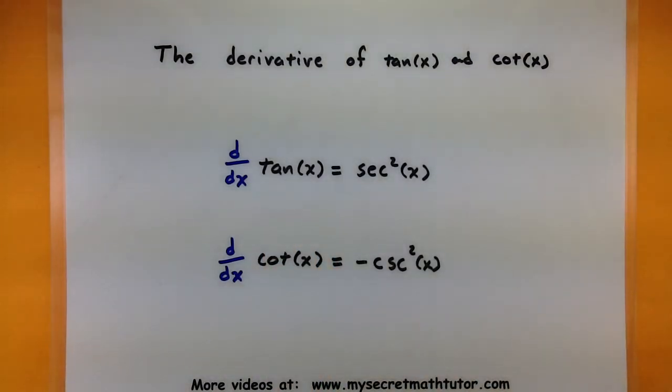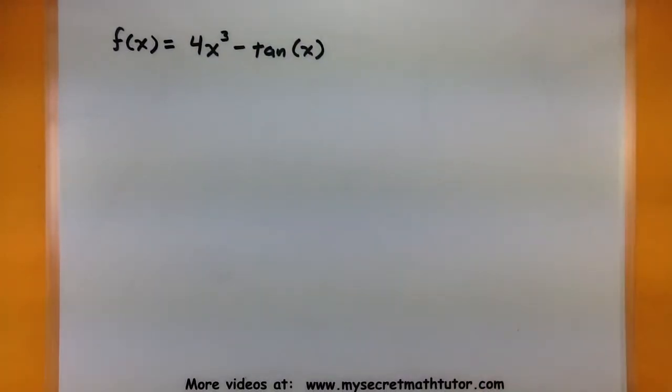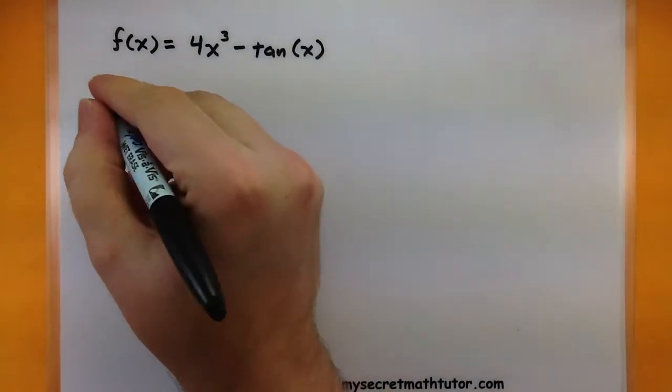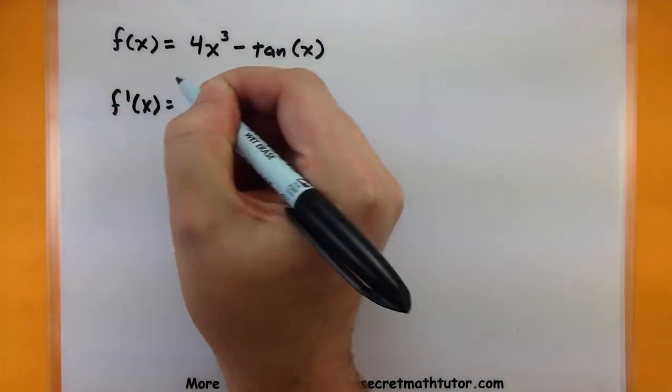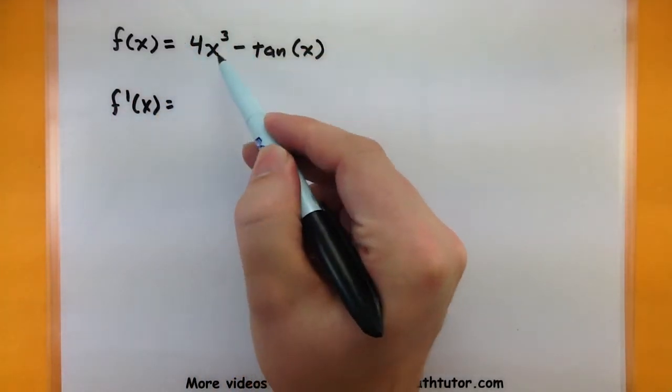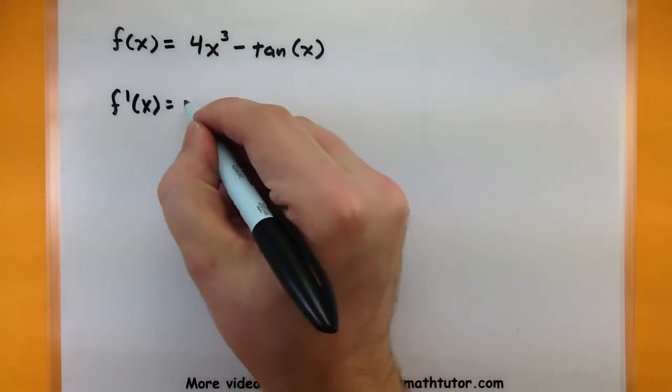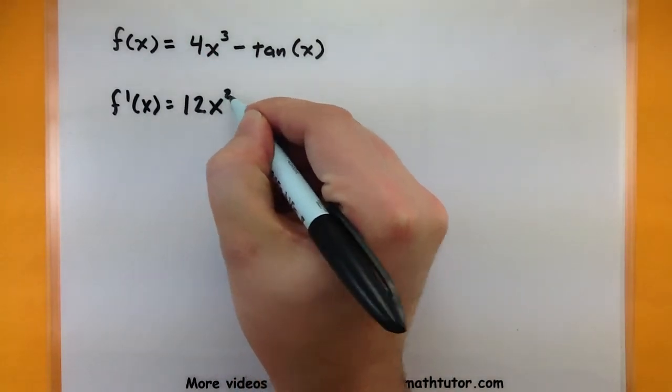Let's go ahead and give it a try with three examples. In this first one we want to figure out what is the derivative of 4x cubed minus tangent of x. So we'll simply start off by taking the derivative of this portion, bringing down our power, so 12x squared.